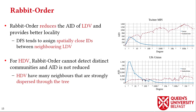By plotting AID values for vertices of different degrees, we can see Rabbit Order provides lower AIDs for low-degree vertices by assigning especially close IDs to neighboring low-degree vertices. However, Rabbit Order cannot form distinct clusters for high-degree vertices, and AID is increased for them.